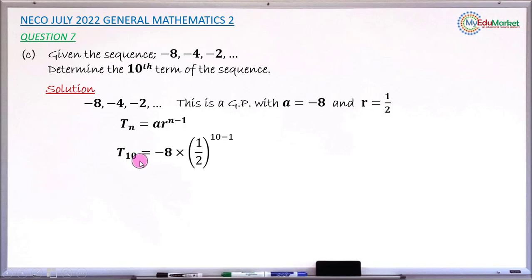Substituting into the formula: T_10 = -8 × (1/2)^(10-1). I've replaced n by 10, R by 1/2, and A by -8.